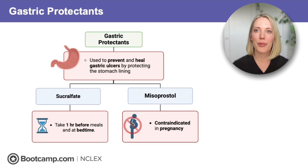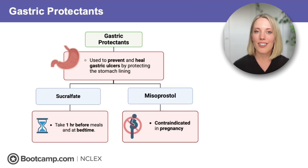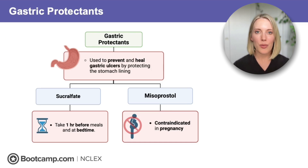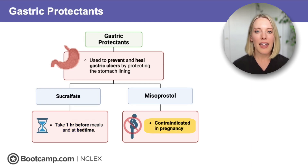Next up, we're talking about gastric protectants. These are used to heal and prevent gastric ulcers — they don't reduce acid; they're more like Band-Aids for the inside of the stomach, protecting the lining from damage. When the mucosal barrier is weak, gastric acid can start to digest the stomach itself, leading to ulcers. Gastric protectants work by either coating the stomach lining or boosting mucus production, giving ulcers time to heal. The two medications in this class are sucralfate and misoprostol.